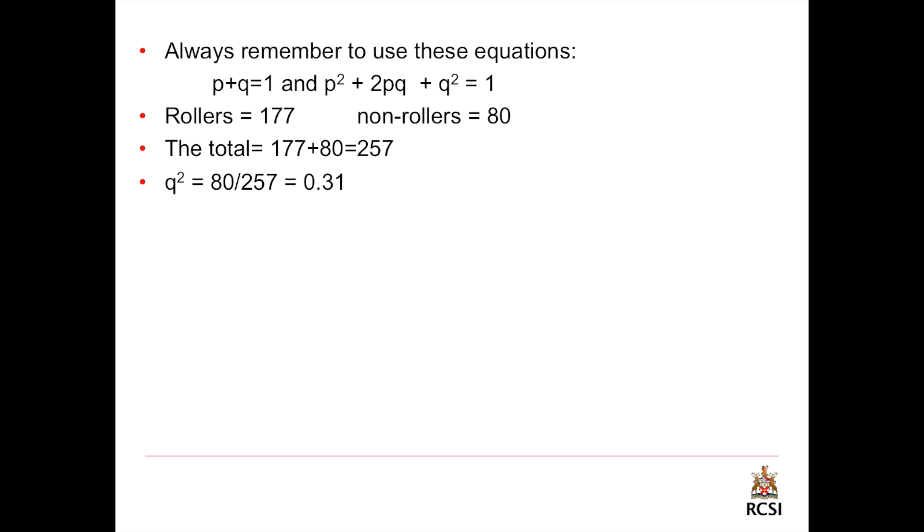177 plus 80 equal 257. To get the homozygous recessive, you should divide the number of non-rollers over the total. So q squared equals 80 over 257, and this will give you 0.31. To get p, we need to square root the q squared, and this will equal 0.557.